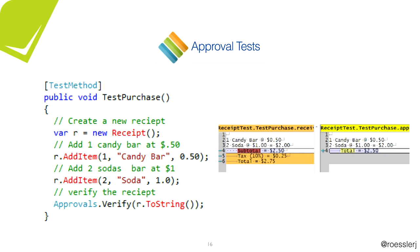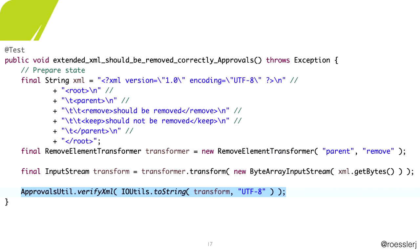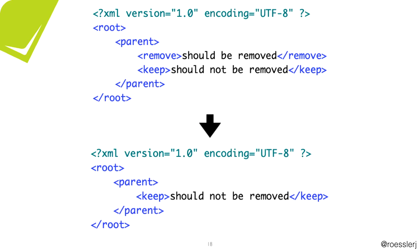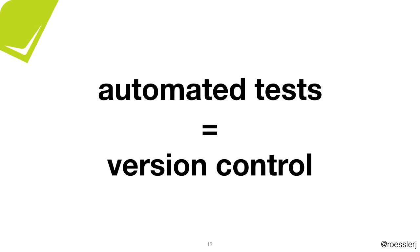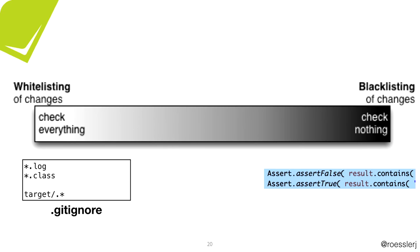What Approval Tests gives you is the ability to change your test to say 'approvals.verifyXML' and then transform the output to string. It makes sure that the test will pass only if the XML looks exactly like the golden master — it even checks for every whitespace character. So: automated tests are version control, and an assert is a blacklist of a change.